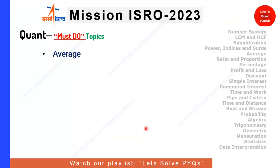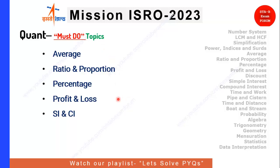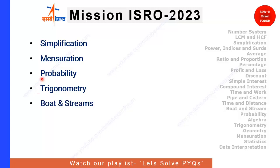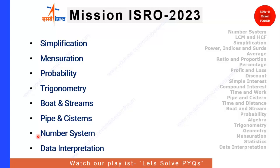The topics you must cover include average, ratio, proportion, percentage, and profit and loss — these four topics appear in all competitive examinations. In this particular ISRO exam, you will also find SI and CI, time and distance, and time and work. Other important topics are simplification, mensuration and geometry — very important in ISRO. You can skip probability as most questions come from trigonometry. Boat and stream, number system — one to two questions expected — and data interpretation may also appear.